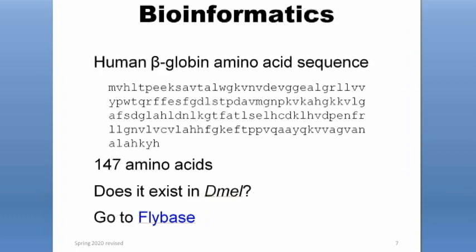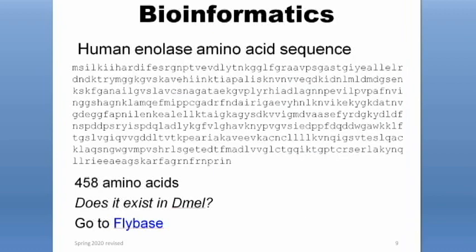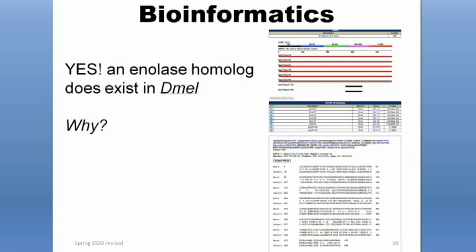Here is the human beta globin amino acid sequence, and when you do the BLAST, you can confirm that beta globin indeed does not have a homolog in Drosophila melanogaster. On the other hand, this is the human NLase amino acid sequence, and if you do a BLAST on it, you'll see there is indeed a homolog in Drosophila. That's because NLase is part of the glycolysis pathway, and both humans and flies need to conduct glycolysis, so we both have homologs of this NLase gene.